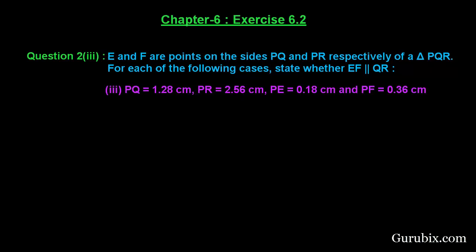Welcome friends. Let us solve the third part of question number 2 of exercise 6.2 of chapter 6. The question says: E and F are the points on the sides PQ and PR respectively of a triangle PQR. For each of the following cases, state whether EF is parallel to QR or not. So let us see how to solve this question.